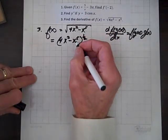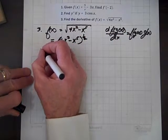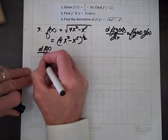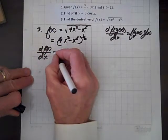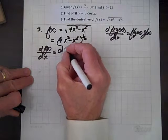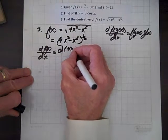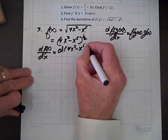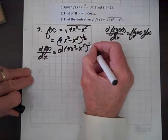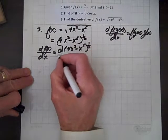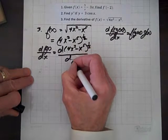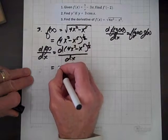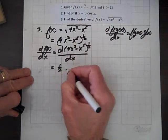And now we can use the power rules. So the derivative of f of x with respect to x equals the derivative of 4x squared minus x to the fifth raised to the one-half with respect to x. And by the power rule, that equals one-half. We bring the one-half down.